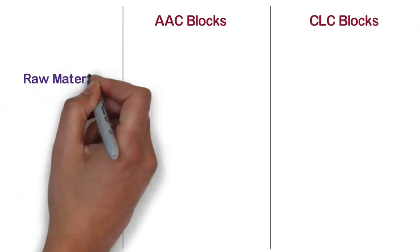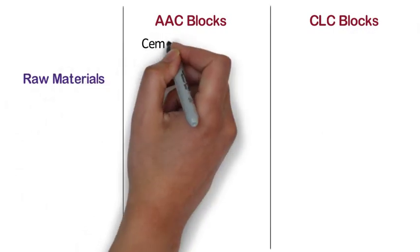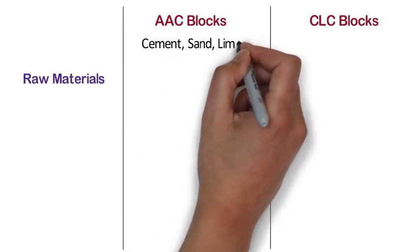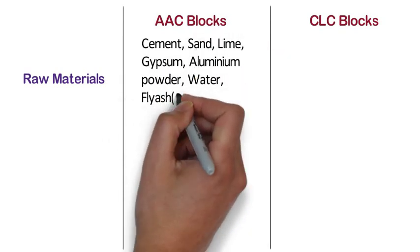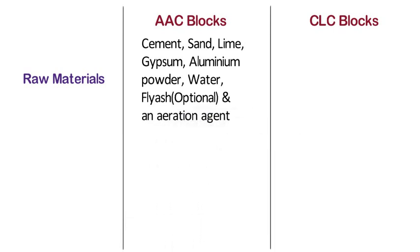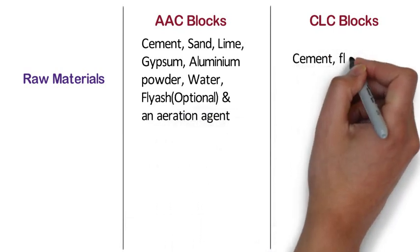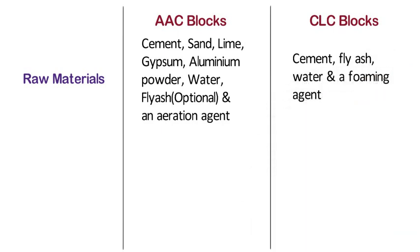Raw materials used. AAC blocks are made from a mixture of cement, sand, lime, gypsum, aluminum powder, water, fly ash, and an aeration agent. Whereas, CLC blocks are made from cement, fly ash, water, and a foaming agent.